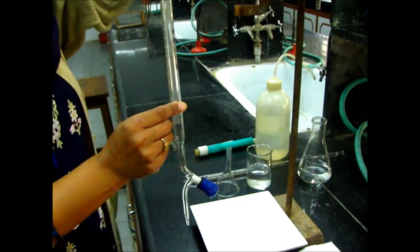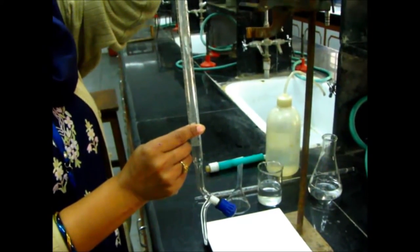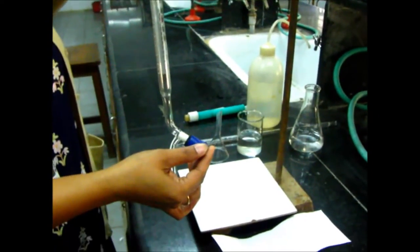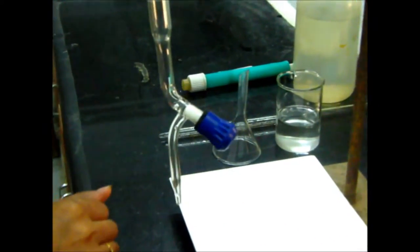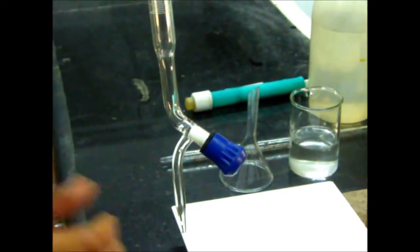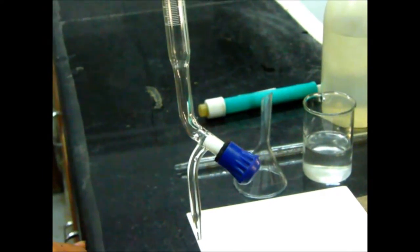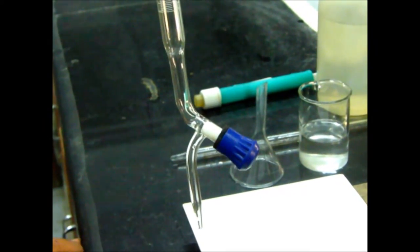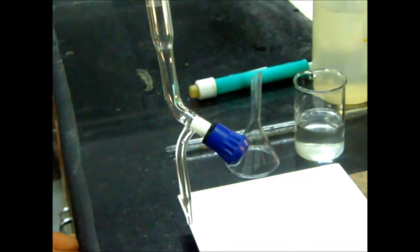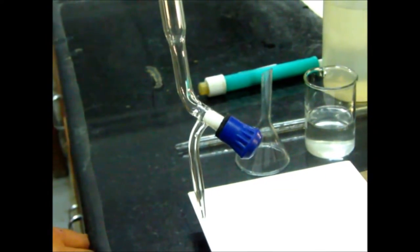A buret is a graduated tube or column fitted with a nozzle at one end. It accommodates larger volumes than a pipette, typically 100ml or 50ml. The least count of a buret may vary depending on its capacity.